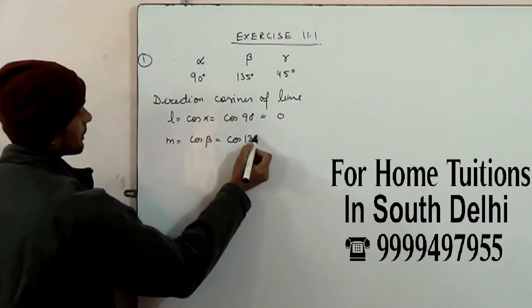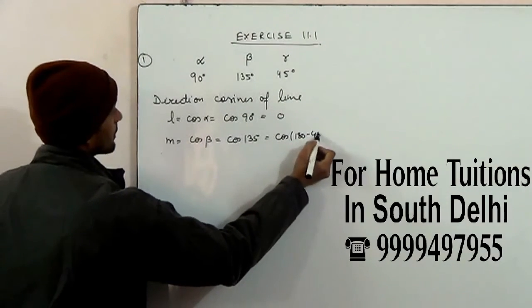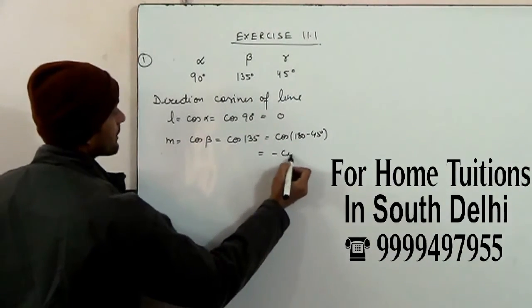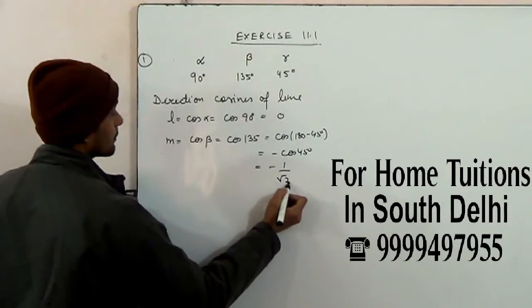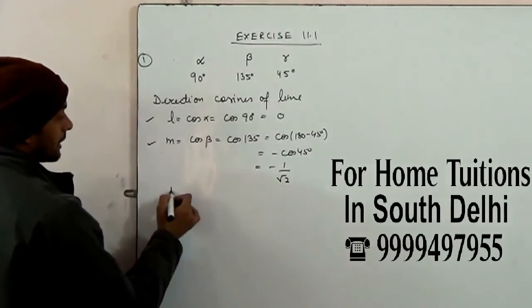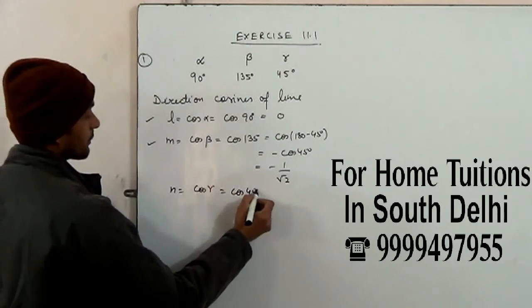Cos 180 minus 45. Cos 180 minus theta is minus cos theta. 1 minus 1 by root 2, 1 by root 2. And cos gamma equals cos 45.